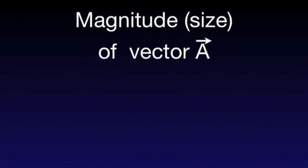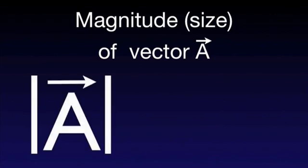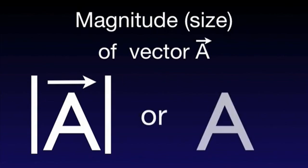In diagrams, a vector is represented by an arrow. The arrow indicates the direction of the vector and its length is proportional to the magnitude of the vector. In writing, we distinguish a vector by putting an arrow above its symbol. If we want to indicate the magnitude of a vector, we can either use a symbol similar to the one used to indicate the absolute value of a number, or we can simply omit the overhead arrow.